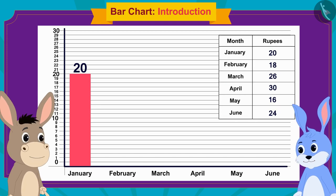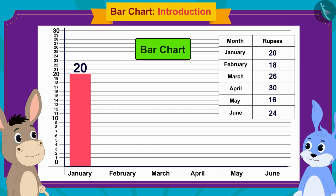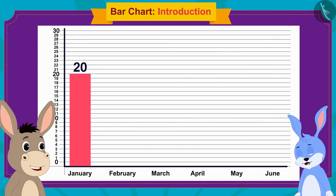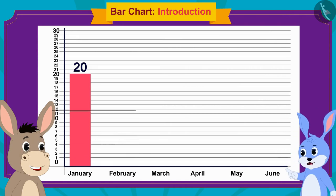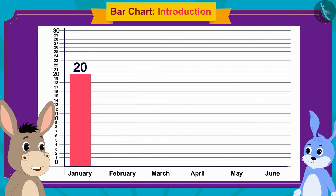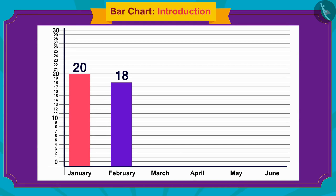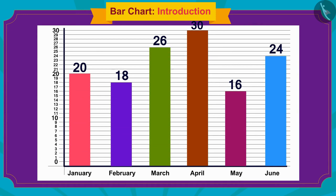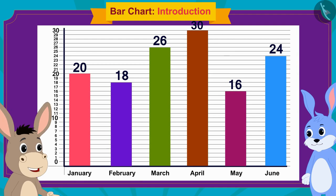'Because these rectangles look like bars, we call this chart a bar chart!' said Bholla. Bunny found it very interesting and made a rectangle with a height reaching number 18 for the amount saved in February. Then Bunny and Bholla together made rectangles in this way for all the remaining months.